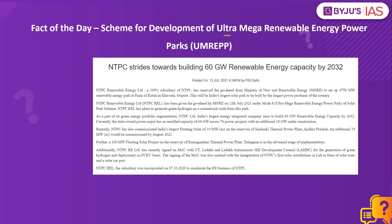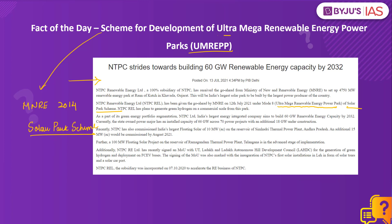Now let us take up the fact of the day for today: the Scheme for Development of Ultra-Mega Renewable Energy Power Parks (UMREPP). An article in the PIB today makes a mention of the Solar Park Scheme and the Ultra-Mega Renewable Energy Power Park Scheme. This scheme was launched by the Ministry of New and Renewable Energy in 2014 under the Solar Park Scheme, which was designed to encourage the construction of solar parks and provides building blocks — land and grid connectivity — to those parks.